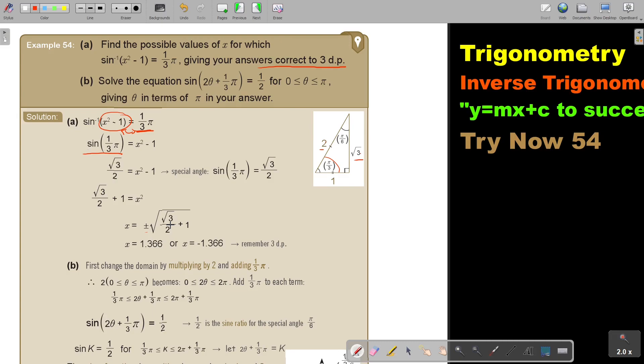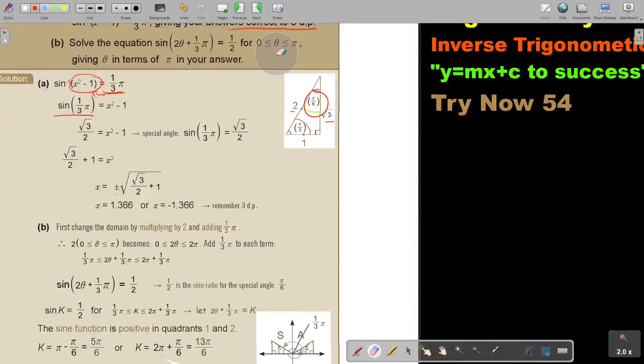If I press this on a calculator, I would press the big square root and then bracket, then square root 3 divide 2 plus 1 equals. It's correct, 1.366, and then just the positive and the negative. Don't forget your three decimal places.